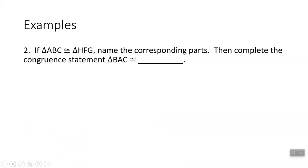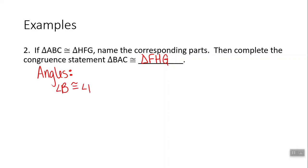Now let's do one without a picture. Triangle ABC is congruent to triangle HFG — name the corresponding parts and complete the congruence statement. Notice the order of letters has been switched. B is the second letter in ABC and F is the second letter in HFG, so starting with B and F: the congruence statement becomes triangle BAC is congruent to triangle FHG. Angle B is congruent to angle F, angle A is congruent to angle H, and angle C is congruent to angle G.